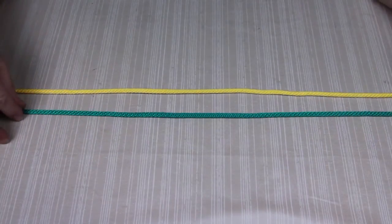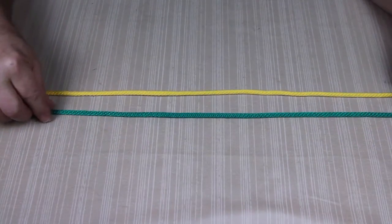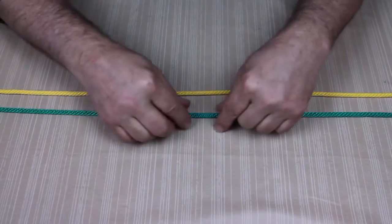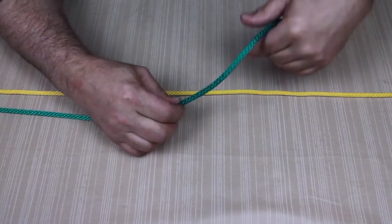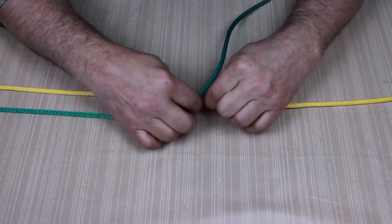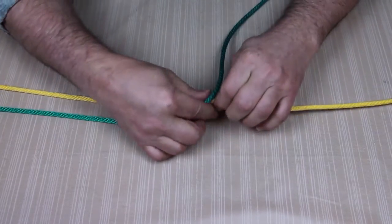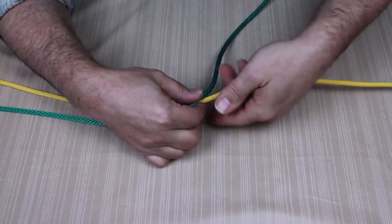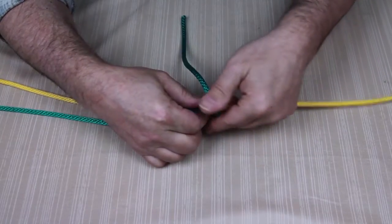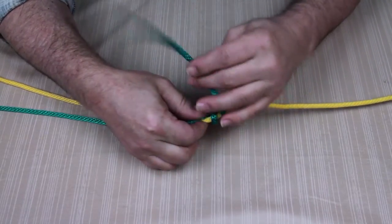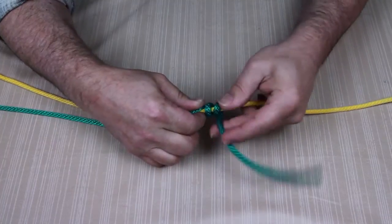First thing you need to do is lay two separate lines side by side. Then take one line and cross it over the second line. What I do is I'll pinch it right here and I'll want to wrap it about four wraps around one of the lines.